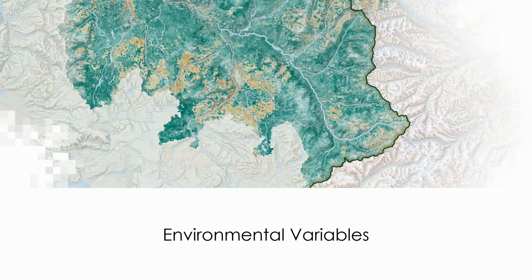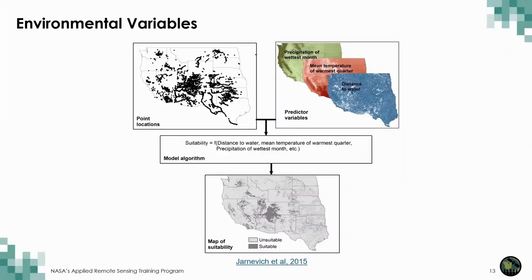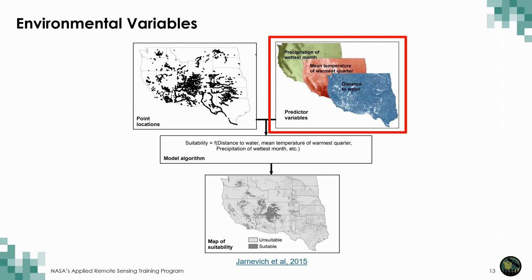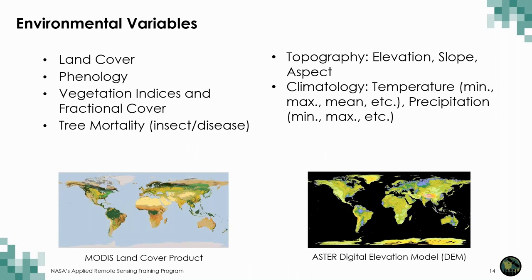Now we will review some of the most common types of environmental variables used as inputs to SDMs. These layer inputs go into the statistical model to assess how each variable influences the suitability of habitat for a particular species. A list of typical environmental predictor variables includes land cover, phenological shifts, vegetation indices and fractional cover, tree mortality, topography, and climatology. The climatological variables can be things like temperature and precipitation.